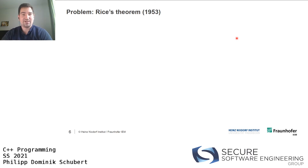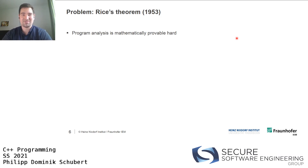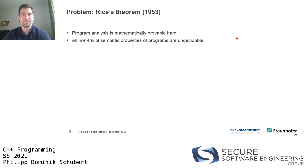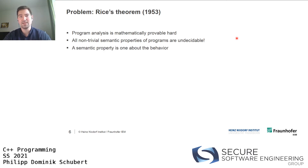We have one problem, especially in the static analysis field, and it originates from Rice's Theorem, established in 1953. The bad thing is that program analysis is mathematically provably hard - all non-trivial semantic properties of a program are undecidable, meaning you can't have a general algorithm that can solve the problem for all instances.